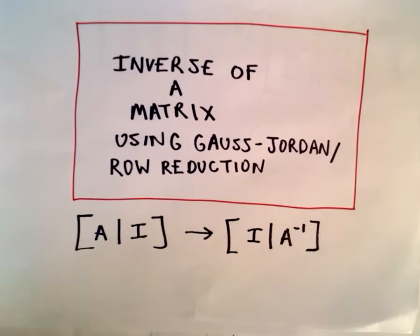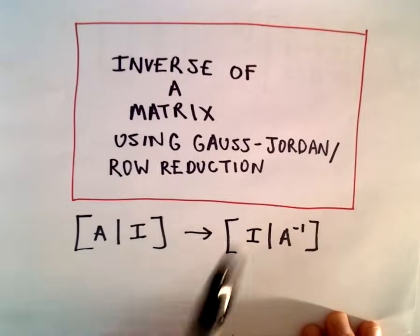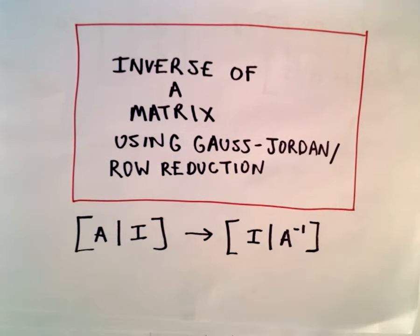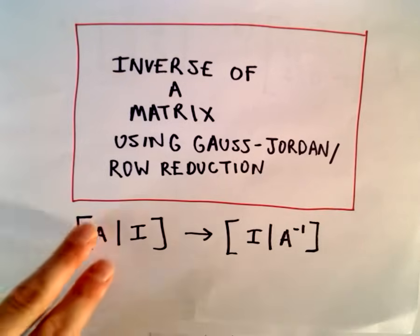Both of my examples that I'm going to do will have inverses. But, you know, maybe you're going through it and you end up with, like, a row of all zeros, for example. Certainly possible. Again, that means you don't have an inverse.